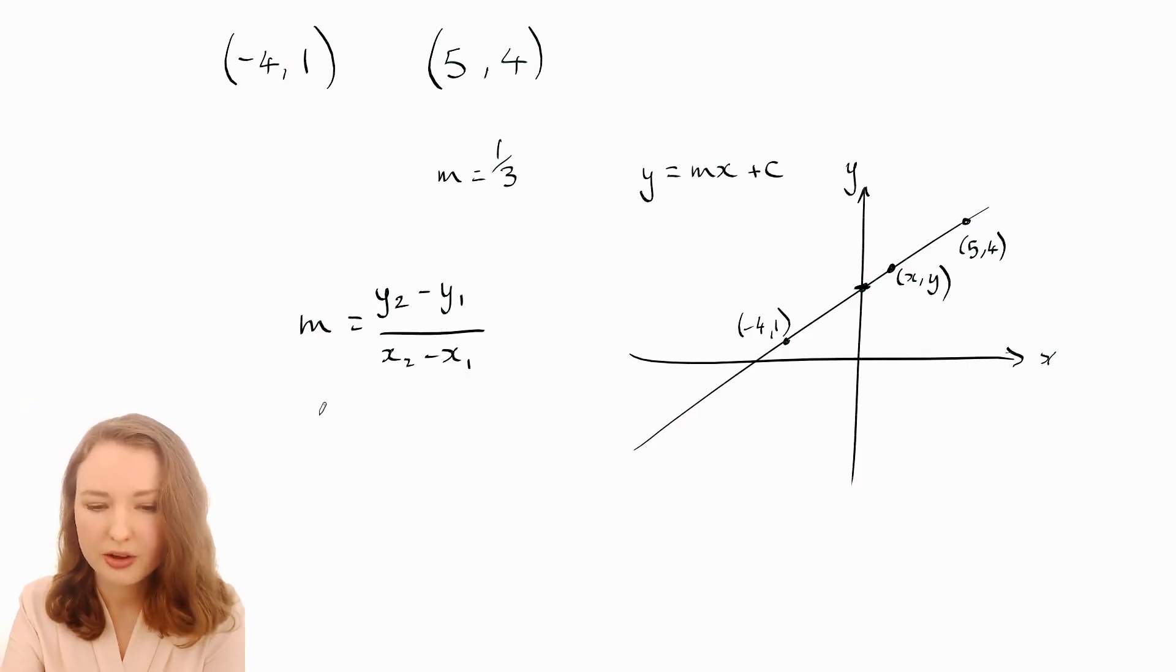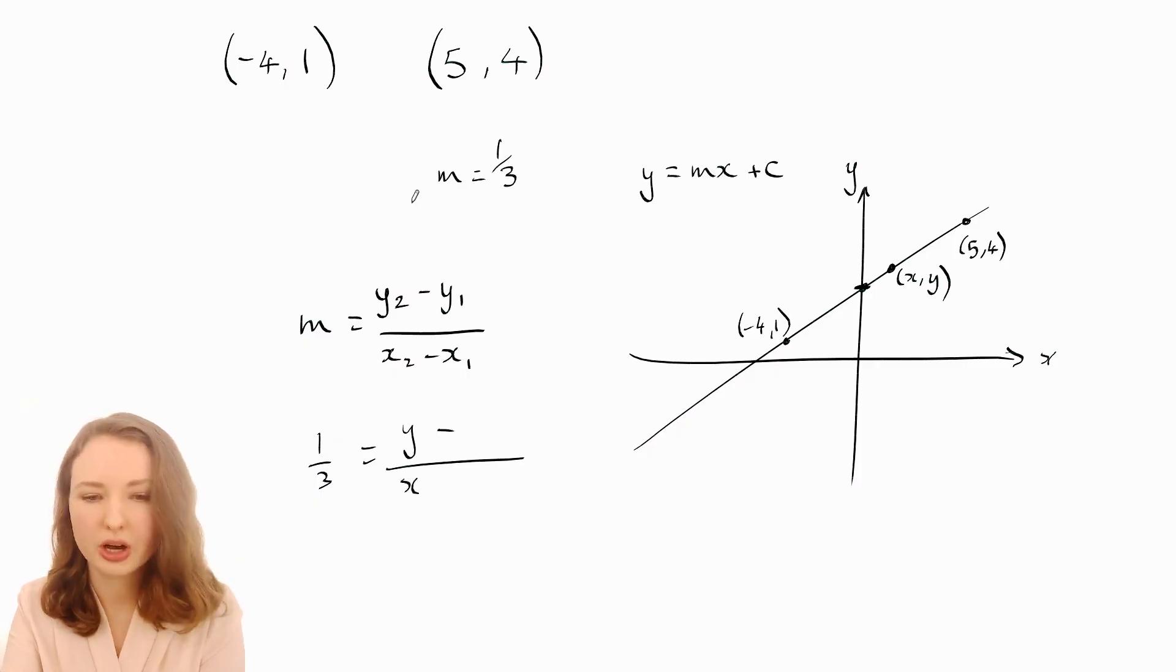So you would have... we know the slope is a third and then I'm going to use our arbitrary point for the y2 and x2 and then for these ones you can pick either point. I'll use the (-4, 1). So the y1 is 1 and the x1 is -4 and if we're subtracting -4 then we're adding 4.